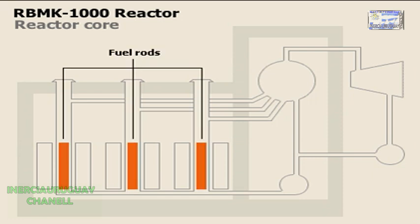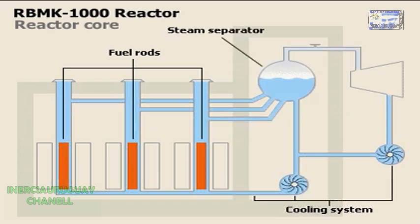In the reactor core, uranium fuel rods produced a self-sustaining fission reaction that could create up to 3,200 megawatts of thermal energy. Heat in the core turned water from the cooling system to steam, which powered the turbines.